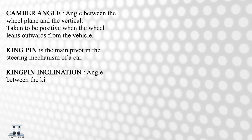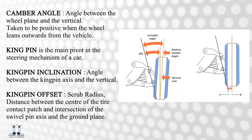Basic Terminology. Camber Angle: the angle between the wheel plane and vertical, taken to be positive when the wheel leans outwards from the vehicle. Kingpin: it is the main pivot of the steering mechanism of a car. Kingpin Inclination: angle between the kingpin axis and vertical. Kingpin Offset or Scrub Radius: distance between the centre of the tire contact patch and the intersection of the swivel pin axis and the ground plane.